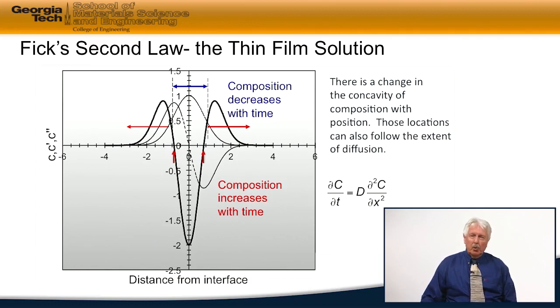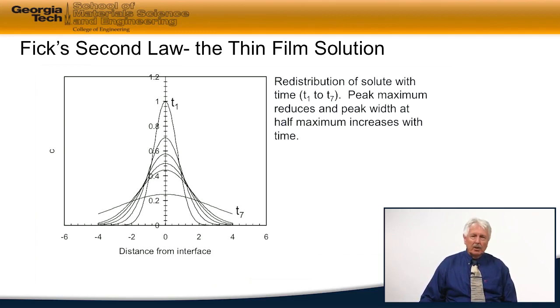Now, the point at which we have a change in concavity can also be used to identify the position as the diffusion process continues. So it can tell us about the extent of the diffusion process. And we can see that more quickly by looking at a series of plots where we have looked at different times.